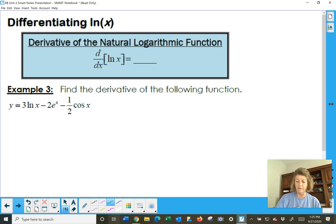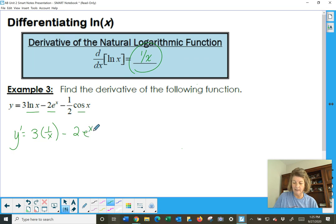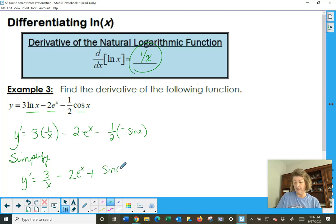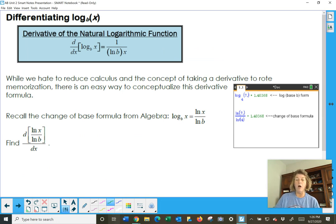Natural log. The derivative of natural log is 1 over x. And find the derivative of the following functions. So they're throwing all three kind of new ones in on us. So y prime equals, derivative of natural log x is going to be 3 times 1 over x. 2 is our multiplier, derivative of e to the x. It's e to the x. Minus 1 half derivative of cosine is negative sine x. And now let's do a simplifying step where we just clean this up a little bit. You could write this as 3 over x if you wish. Minus 2 e to the x plus sine of x over 2. Or if you'd rather say 1 half sine, that's fine too.